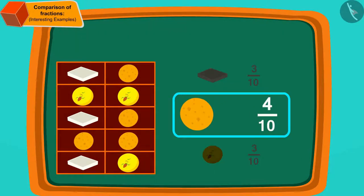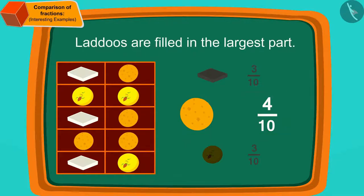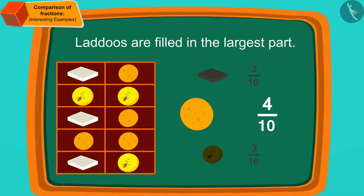Absolutely correct! Laddus are filled in the largest part — 4 tenths of the sweet box.